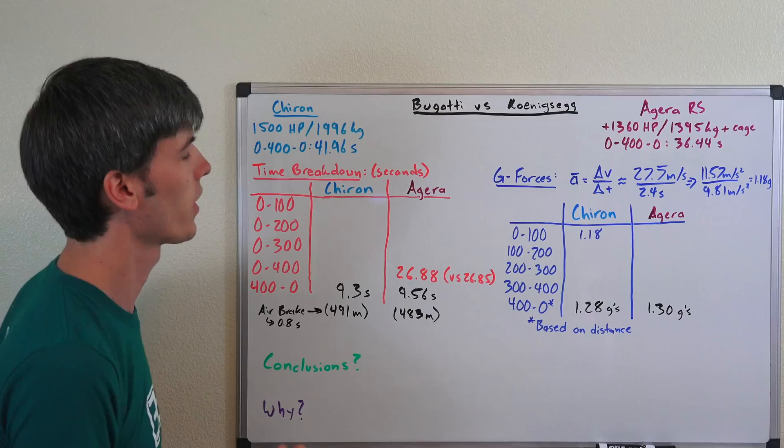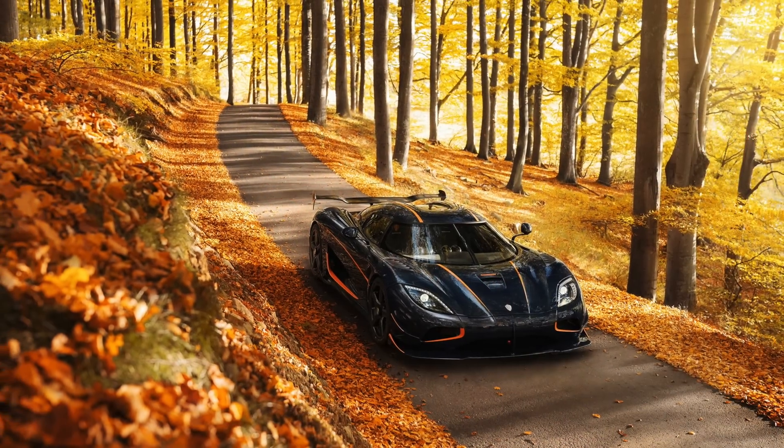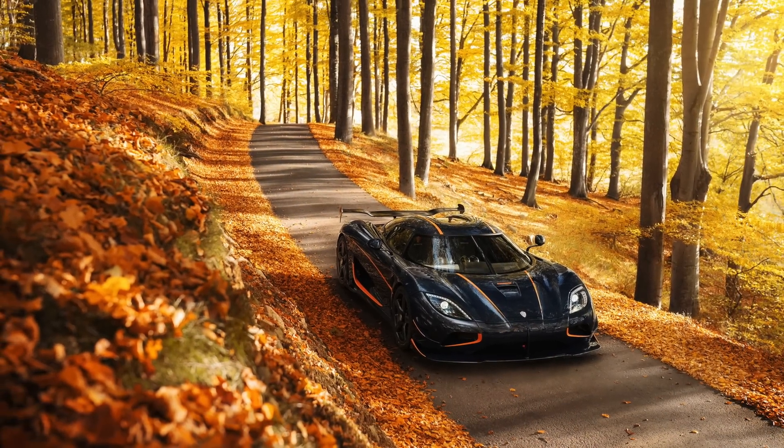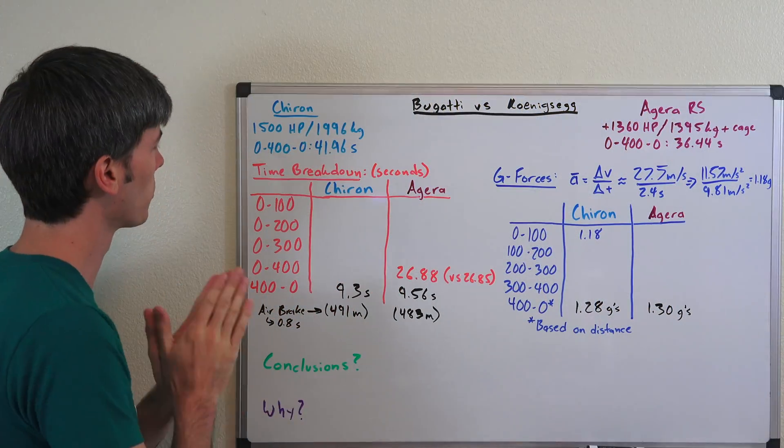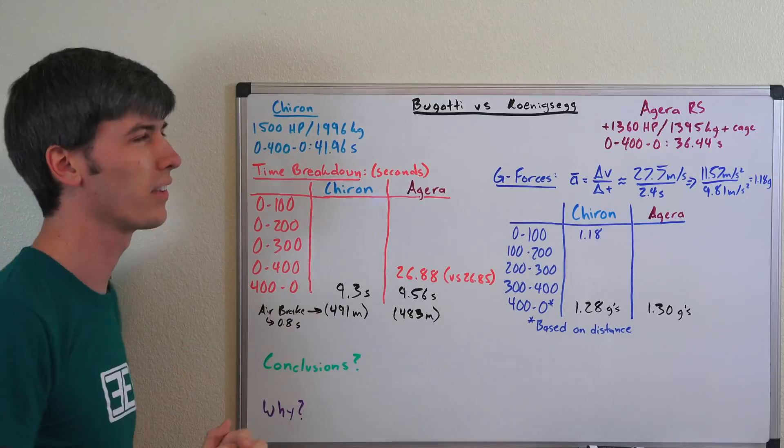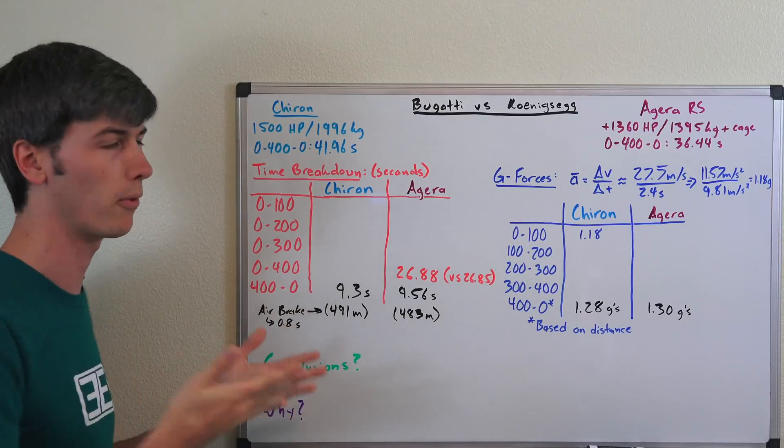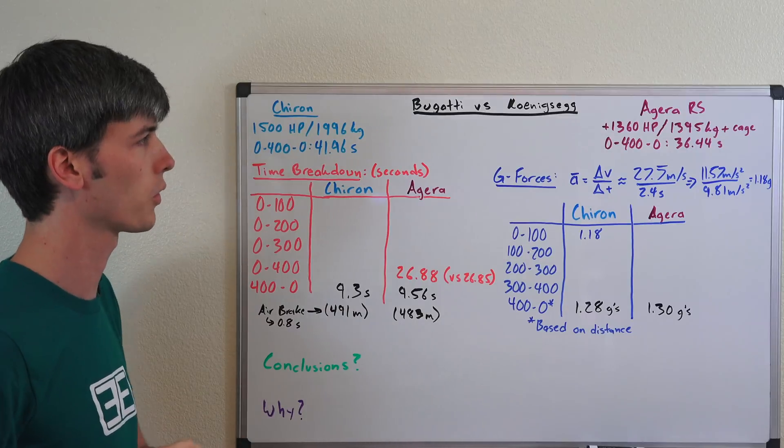In this video we're going to analyze those times and talk about how Koenigsegg basically destroyed the Chiron in this test. Starting off with some specs about the vehicle, the Chiron weighs about 2,000 kilograms, about 4,400 pounds and has 1,500 horsepower.